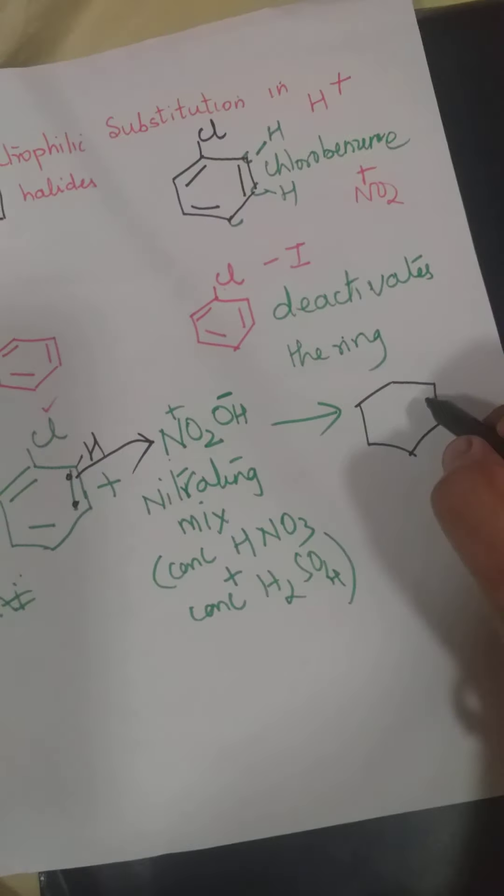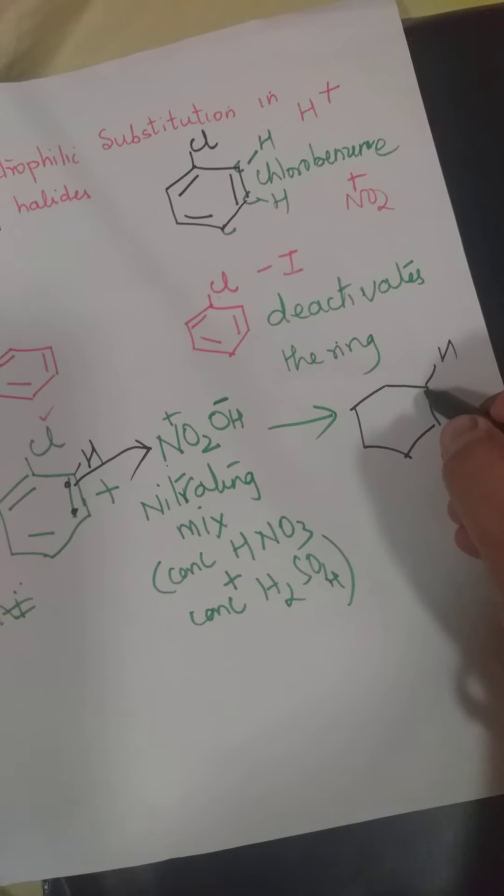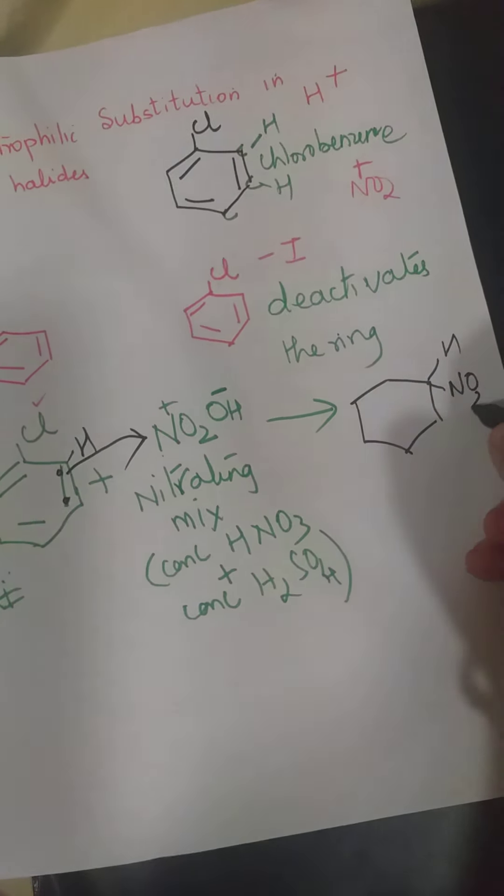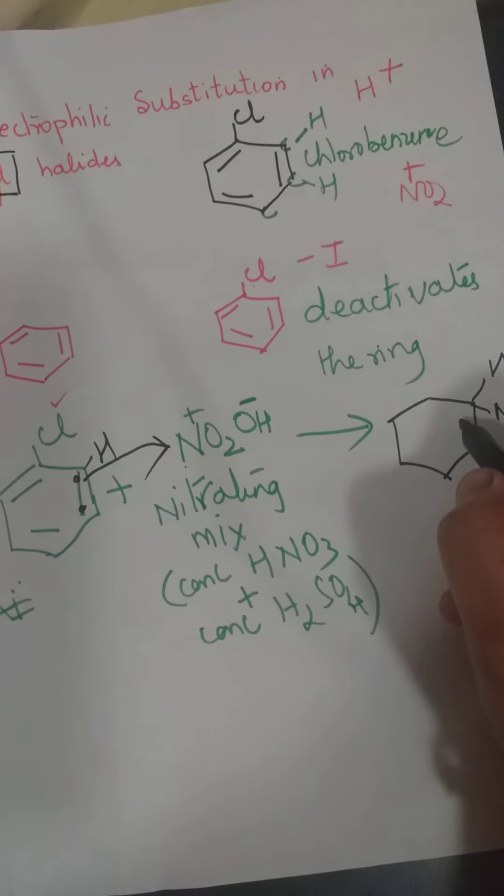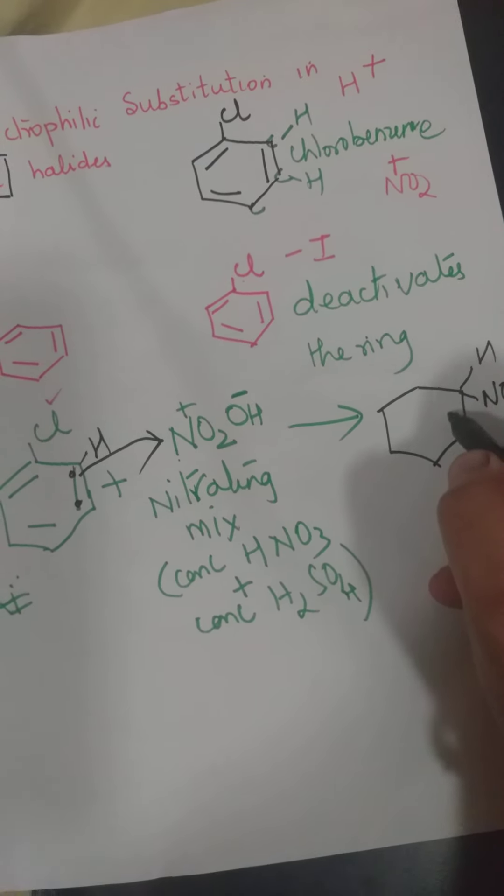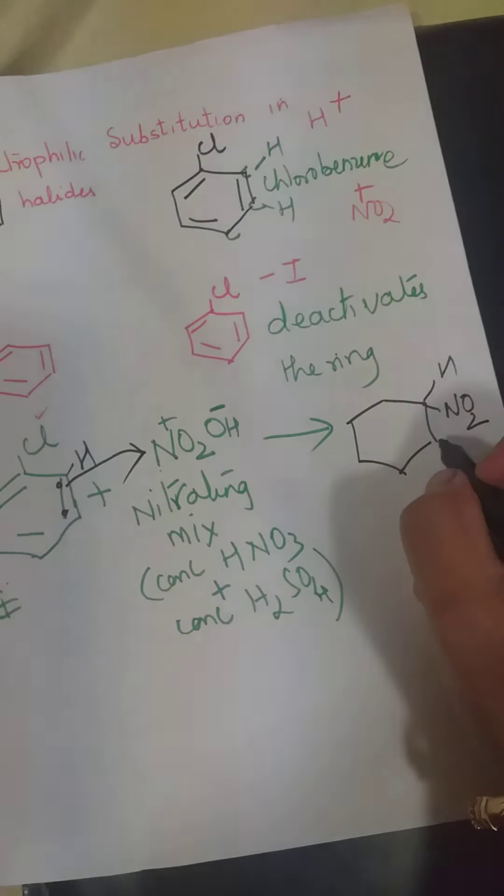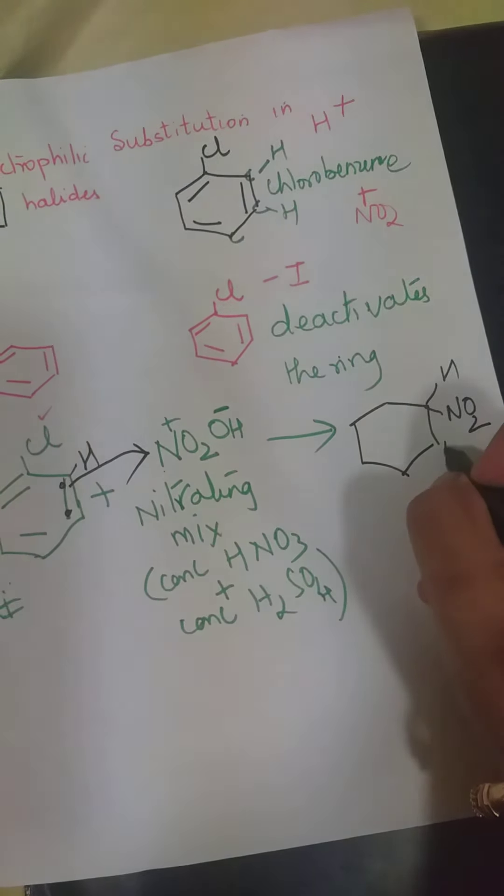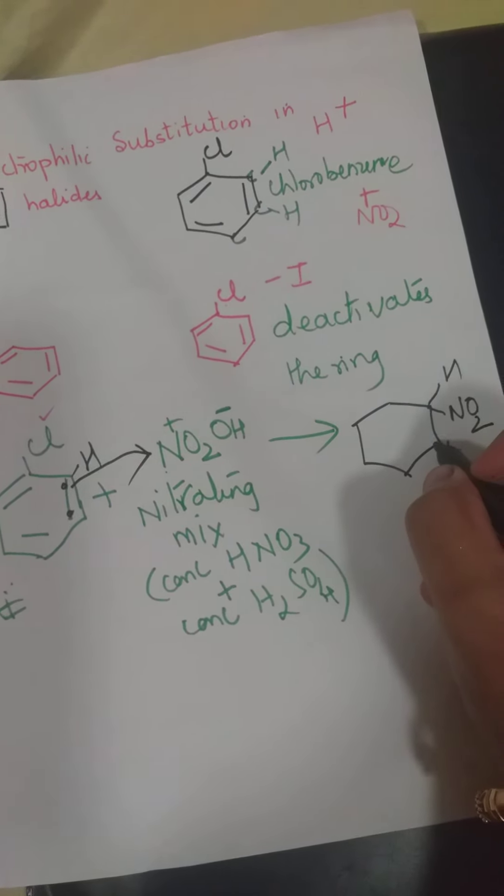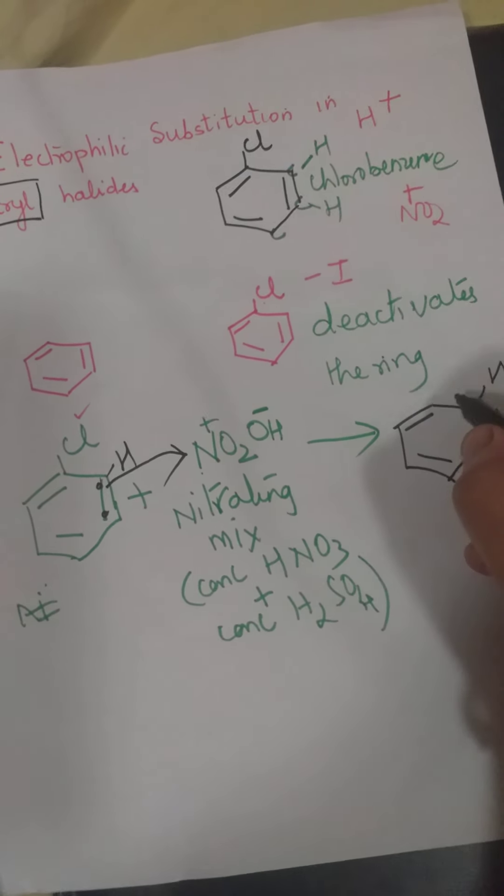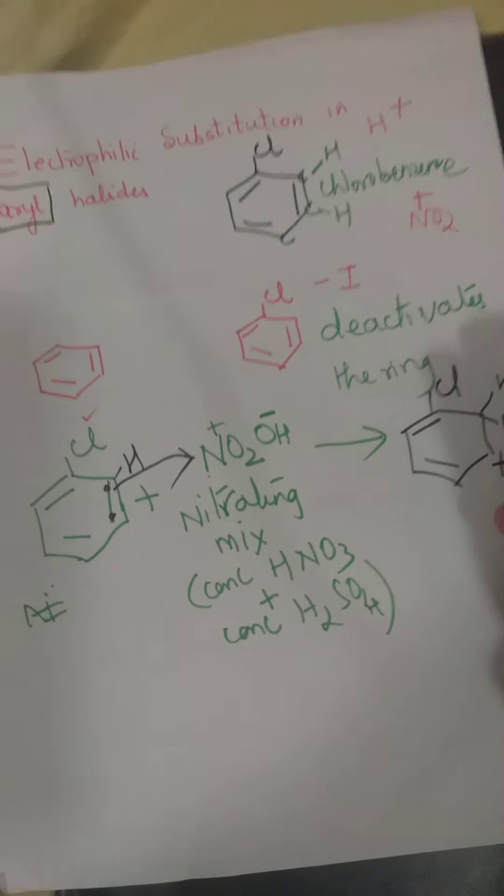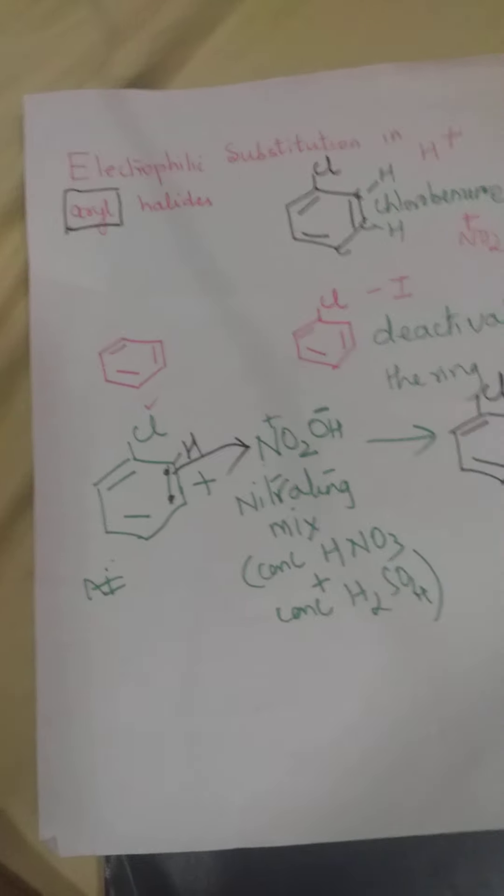Yeh jo electron pair hai, N ko gaya, so yahan H hai, yahan NO2 hai, aur iske wajah se, yeh double bond abhi nikal gaya, kyunki dono electron NO2 ko gaya, aur iske wajah se, yeh carbon ko, ek positive charge milega. This carbon will get a positive charge, baaki double bonds, apne apne jagah pe, and Cl.